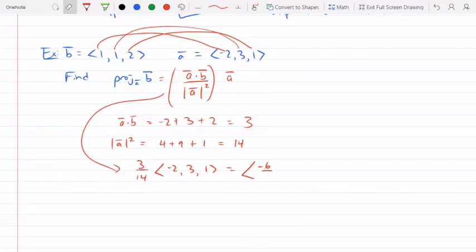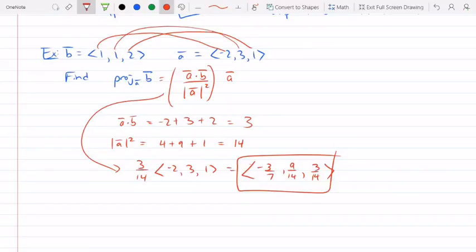Or multiply that in. So, it's going to be 3 over 14, which is negative 3/7, comma 9/14, comma 3/14, and there we go. That's the projection of B onto A. Alright, now you can do projections and scalar projections. Fabulous.